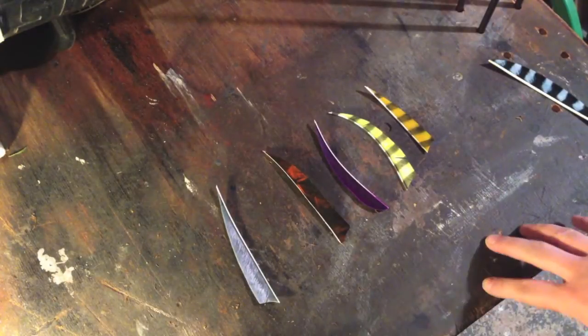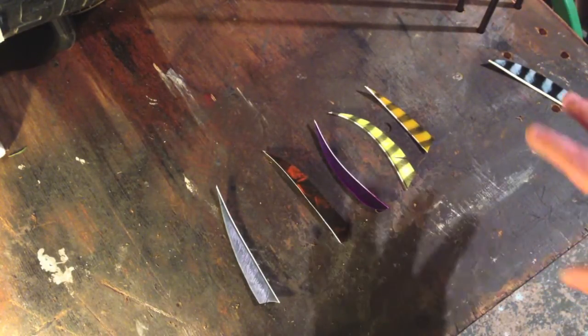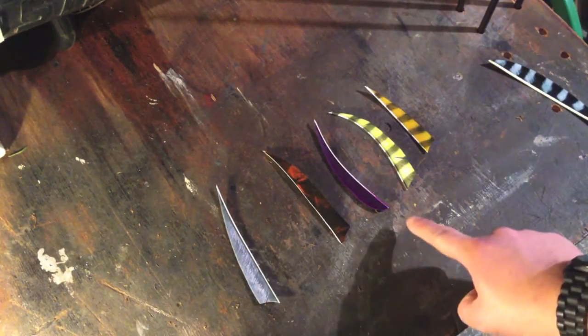On the workbench here we have a couple of different cuts of feather. There are two main cuts, there are other shapes available but we're going to be talking about the two main ones today. And that is the shield cut and the parabolic.